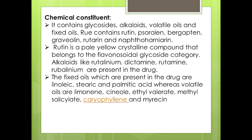These are the important chemical constituents present in the drug. Rutin is a pale yellow crystalline compound that belongs to the flavonoid glycoside category — it is a flavonol glycoside which is present in the drug.